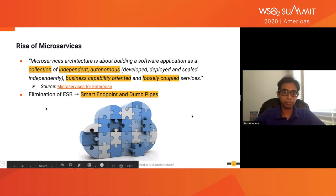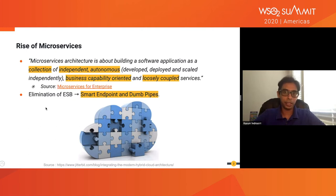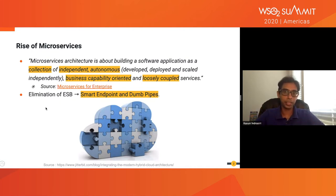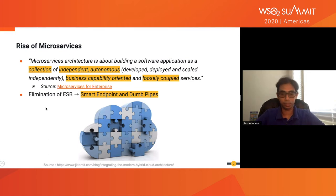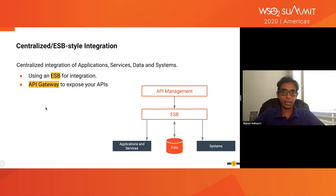If you dig deep into microservices architecture, the heart of it is the breaking of monolithic runtimes. At the very beginning of microservices architecture, we had the elimination of the central enterprise service bus. With the elimination of the central ESB, it was suggested to use smart endpoints and dumb pipes. In today's session I'm going to talk about what these smart endpoints and dumb pipes really are, and the key challenges and solutions when building this kind of architecture.